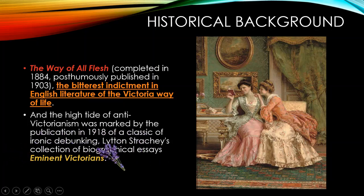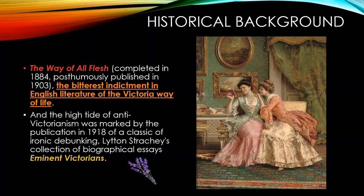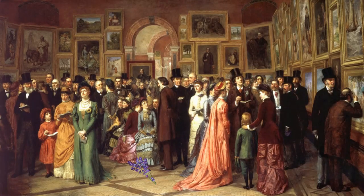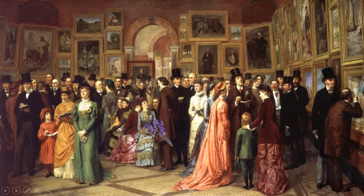Another work that mocks Victorian values is 'Eminent Victorians.' The high tide of anti-Victorianism was marked by the 1918 publication of this classic ironic, debunking collection of biographical essays. The 'Eminent Victorians' strategy addresses five eminent Victorian figures, including Florence Nightingale, and tries to show these are not icons — they are even less than ordinary people. In this painting you see a quintessential Victorian image with many people gathered, more concerned with having been seen there than with the work of art itself — a bourgeois concern for image.